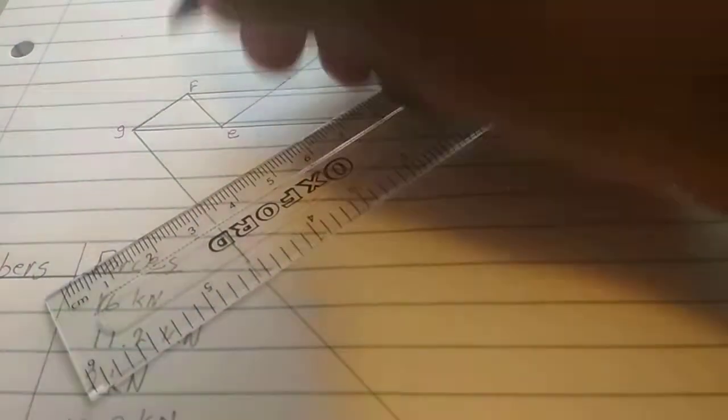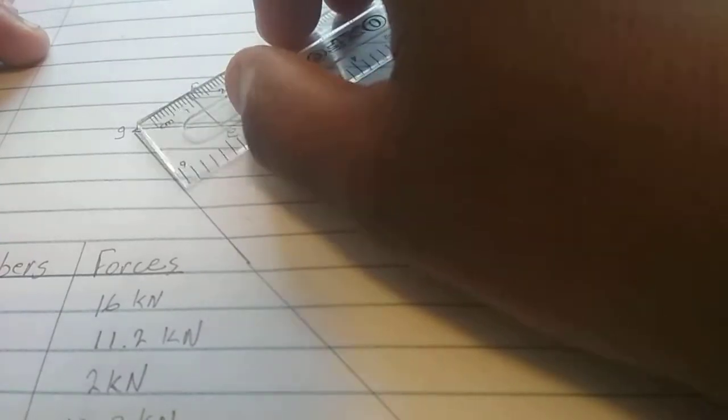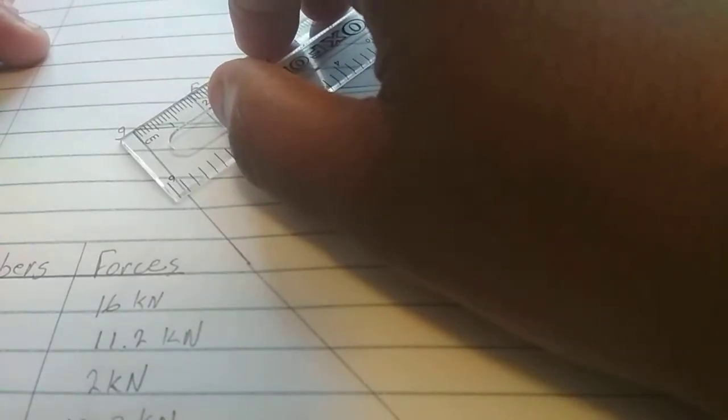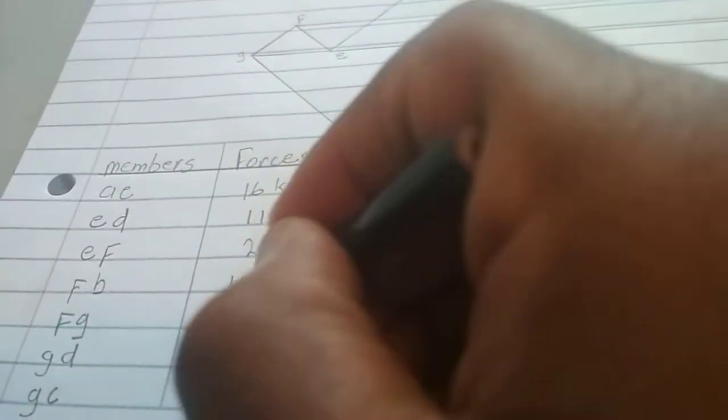The next one is FG. FG. There is F, it's G. Measure that. It's also about, let's say it's also about 2, 2 kilonewtons.